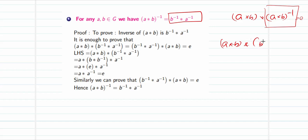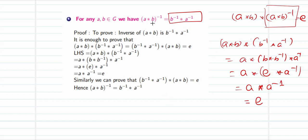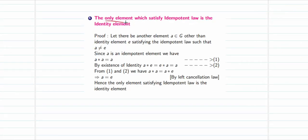By the associative law, we regroup brackets to isolate b★b⁻¹, giving a★(b★b⁻¹)★a⁻¹ = a★e★a⁻¹. Since identity operated with any element returns that element, this simplifies to a★a⁻¹. An element binary-operated with its inverse gives the identity element e. This proves that (a★b)⁻¹ = b⁻¹★a⁻¹.